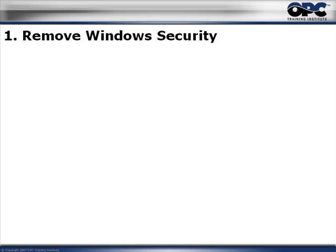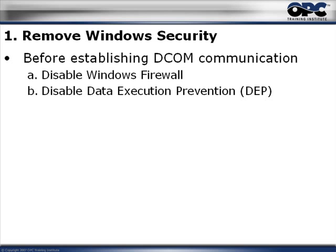Let's talk about the first of the five steps. What we're going to do is completely remove Windows Security. There are a couple of steps here. Before we make DCOM work properly between the different PCs, we're going to disable the Windows Firewall and then we'll also disable Data Execution Prevention.